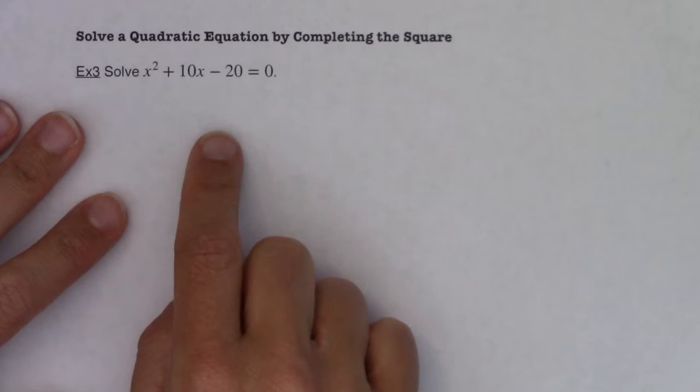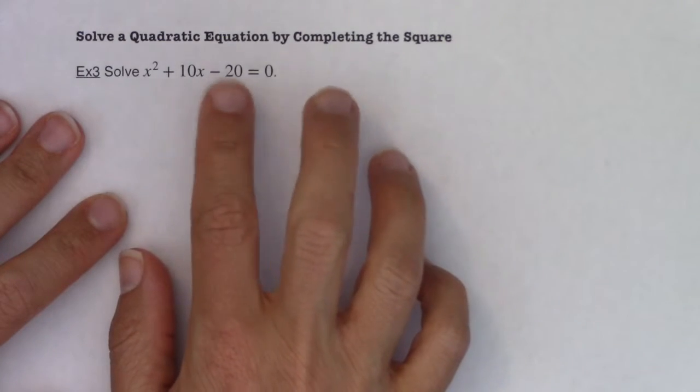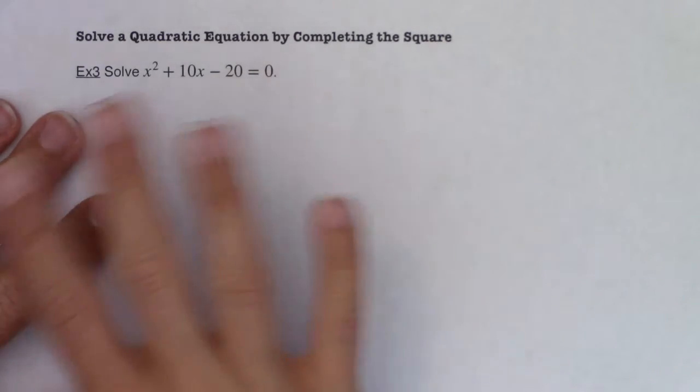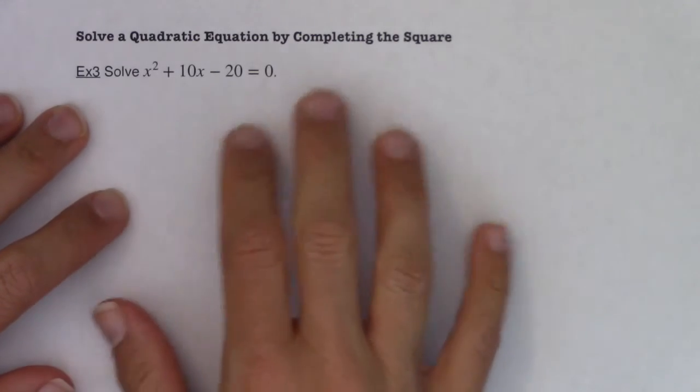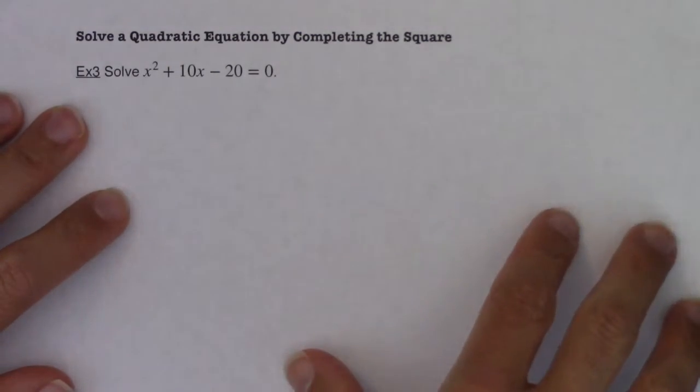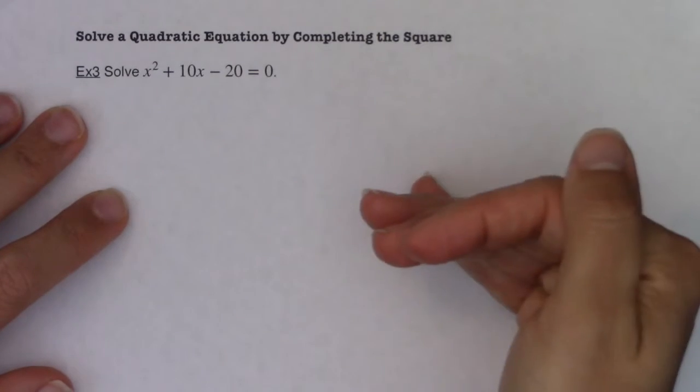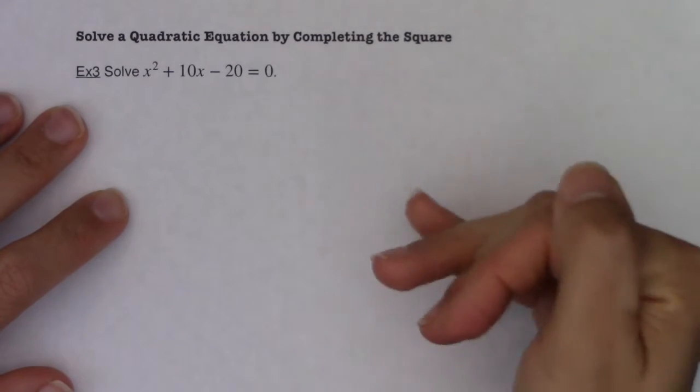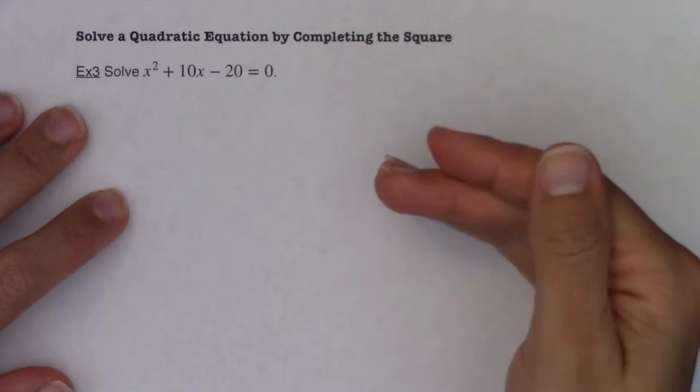I could try to factor it if I wanted to, but there is nothing that multiplies to 20 and adds up to 10. So I get stuck trying to factor. So completing a square is, again, it's one of those techniques that will always work. I just happen to prefer the quadratic formula to completing the square, and the quadratic formula also always works.